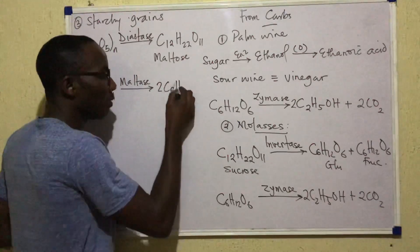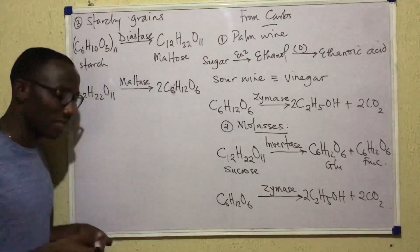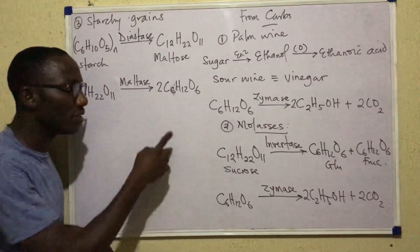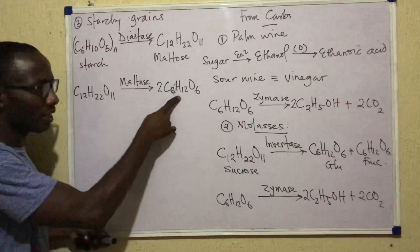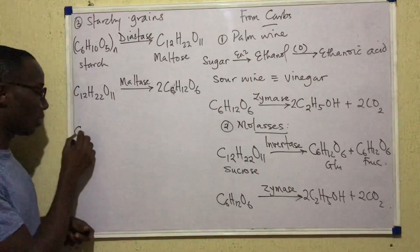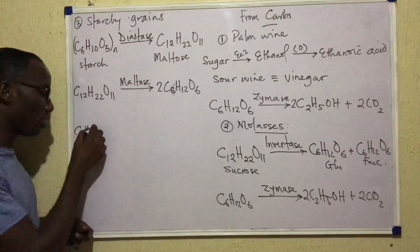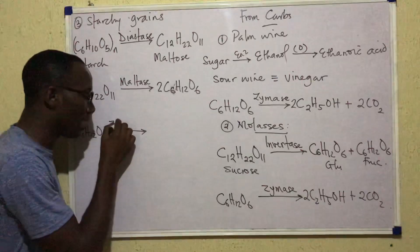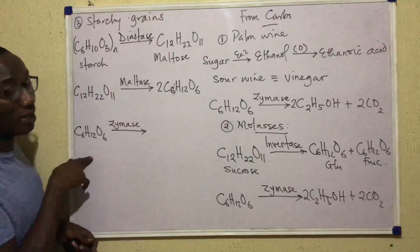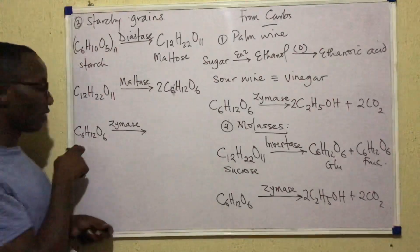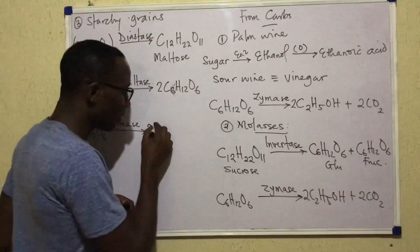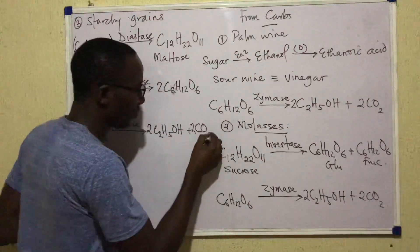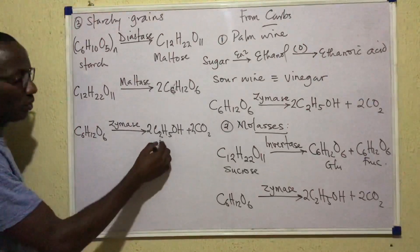Maltase breaks down maltose into glucose — since maltose is a disaccharide made up of two units of glucose. Then glucose is broken down by zymase, which is the enzyme specific for glucose, giving C2H5OH plus CO2. So this is ethanol prepared from starch via a three-step enzymatic process.